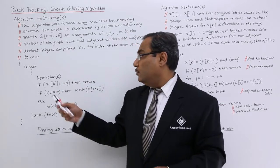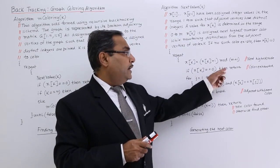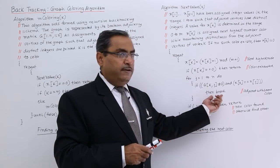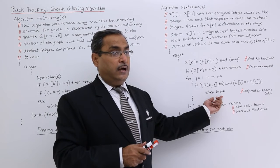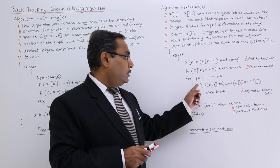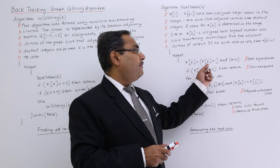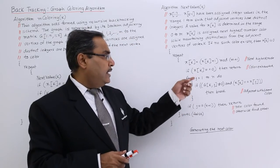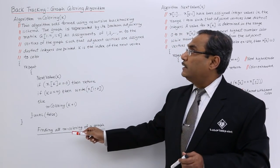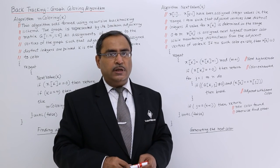The control is returned to the calling location. If x[k] is not 0, it proceeds to the next section; if it is 0, it returns from there. If a break occurred, j will not equal n+1, so the repeat loop continues, incrementing x[k] and suggesting the next color. In this way, the graph coloring algorithm using m-coloring and next_value(k) finds all solutions. Thanks for watching this video.